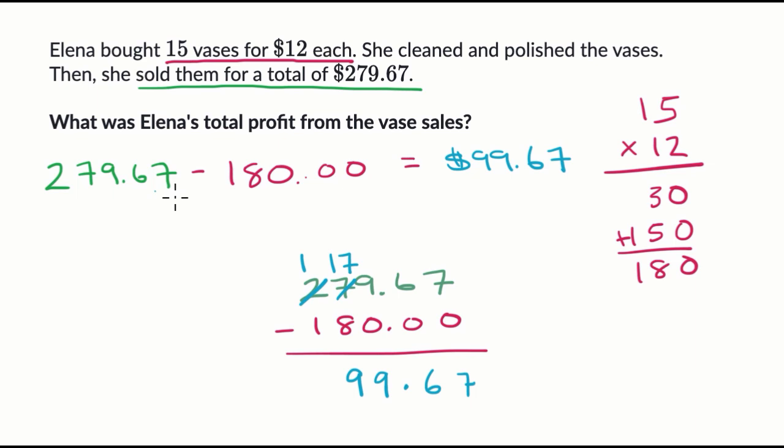Another way that you could just make sure you're in the right ballpark, if this was 280 dollars, so just a little bit more minus 180 dollars, that would have been a hundred dollars. But we are just a little bit less. We're 33 cents less than that. And so it makes sense that we're 33 cents less than a hundred dollars right over here.